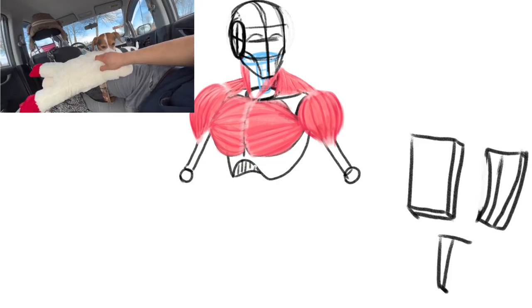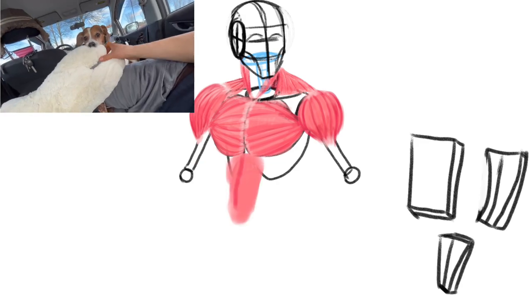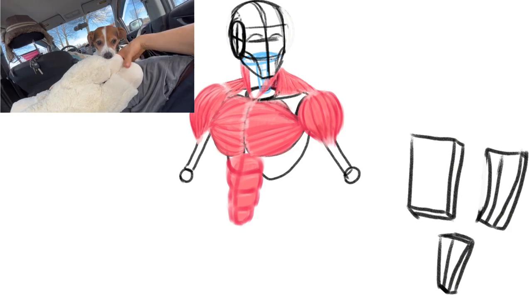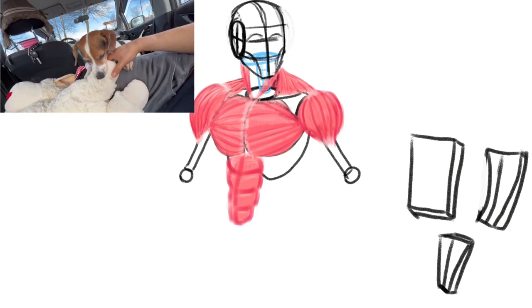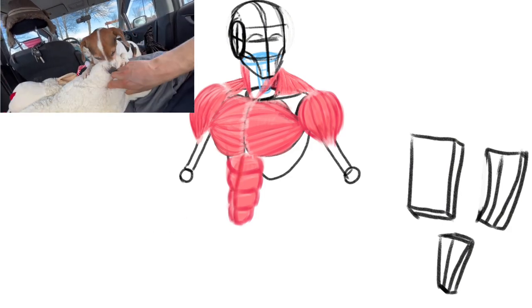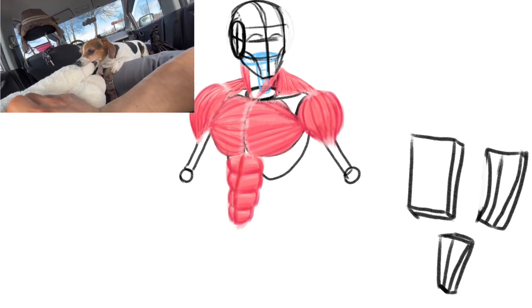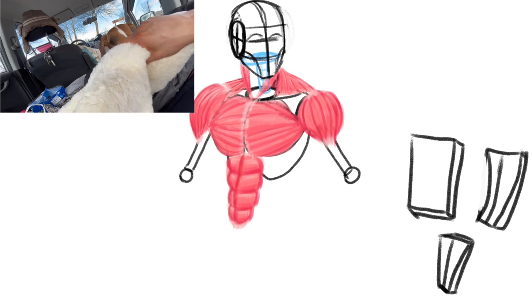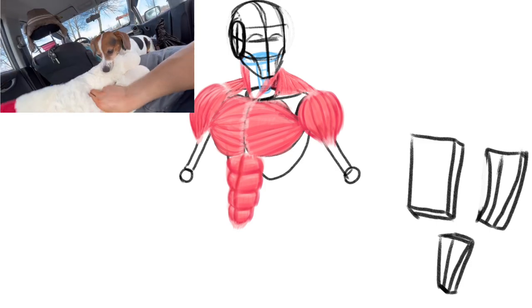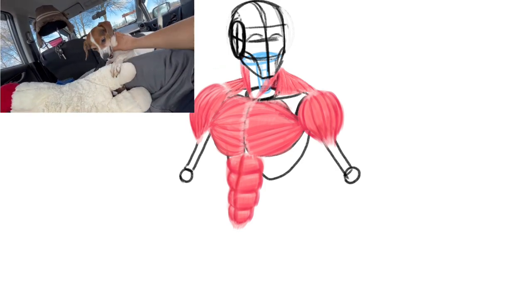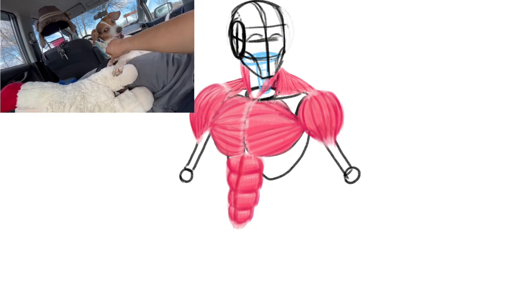And the last one we'll do is the abdominals. So they're just thin, pliable, stretchable, twistable muscles, and they kind of look like bubble wrap actually. So you just have them attaching to the sternum, and they go down to the hips.